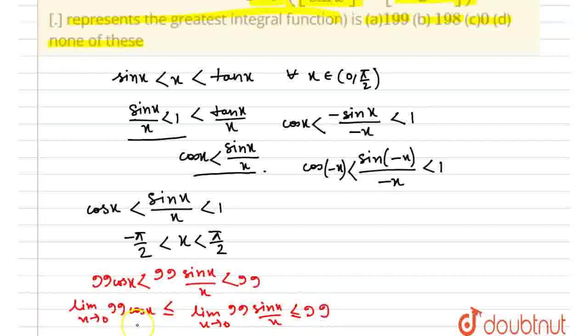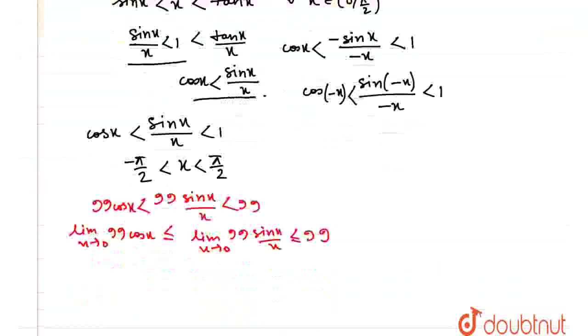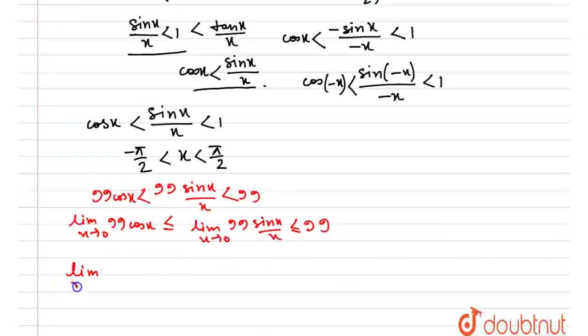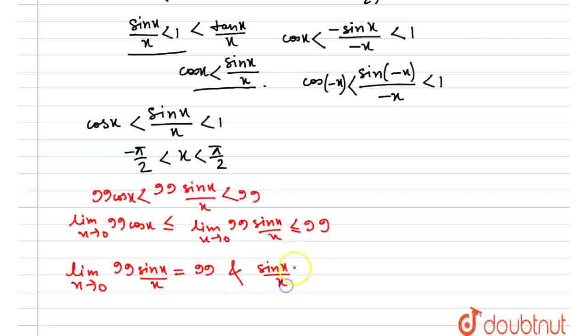And that is less than equal to 99. Now, fortunately, this is 99 and this is also 99. So, by squeeze by sandwich theorem limit x goes to 0 of 99 sinx by x that is equal to 99 and sinx by x 99 of it is always less than 99 for all x. So, this forces because 99 sinx by x approaches 99 from below.